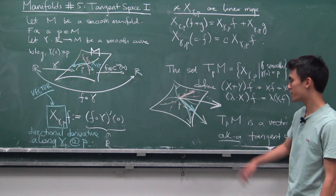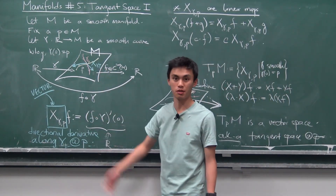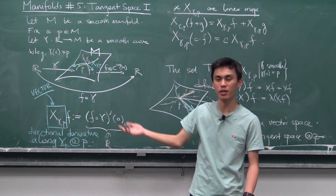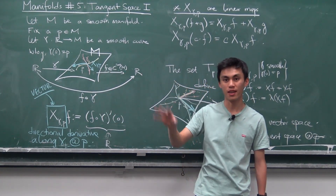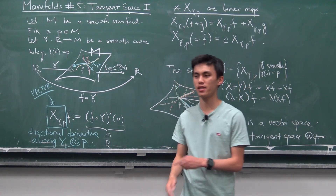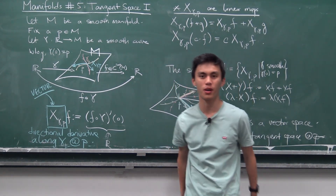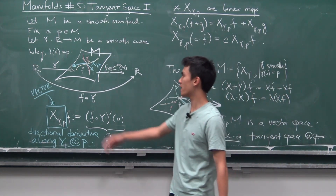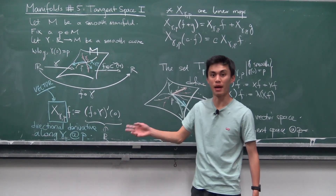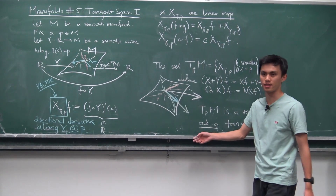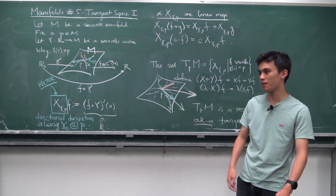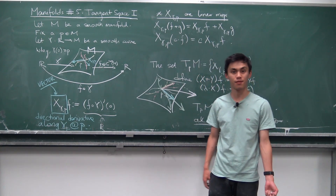So tangent spaces are not tangent planes. We define them to be directional derivative operators because we want to recover a notion of going along a certain direction in a manifold. You can't differentiate a curve to get that vector, so the only way is to define directional derivative operators — those are exactly what we think of as tangent vectors. In the next video, we'll look at how to construct a basis for the tangent space, which will be very useful for cotangent spaces and everything beyond.